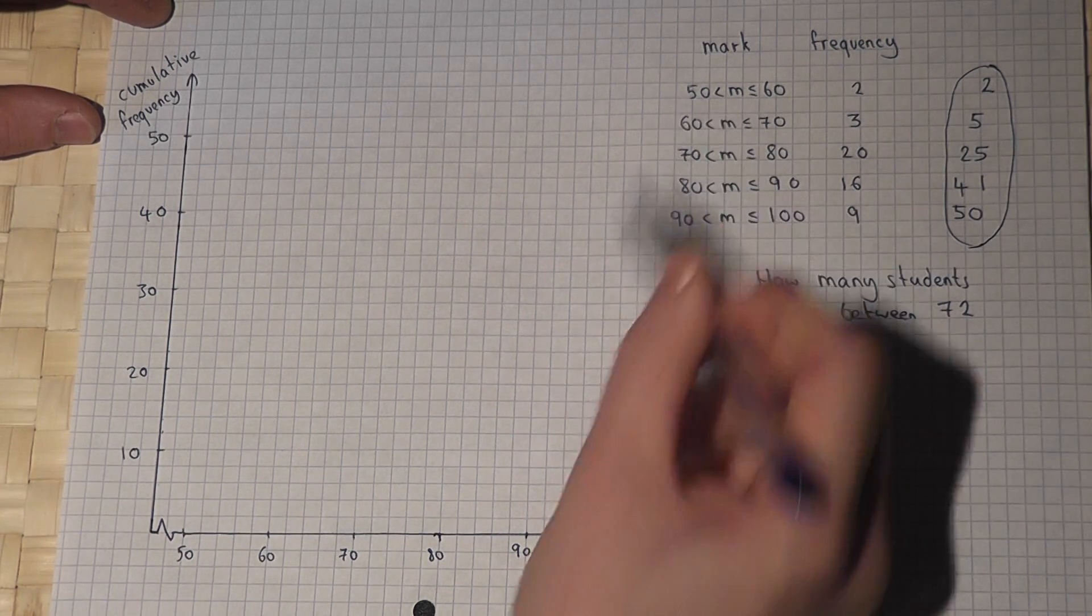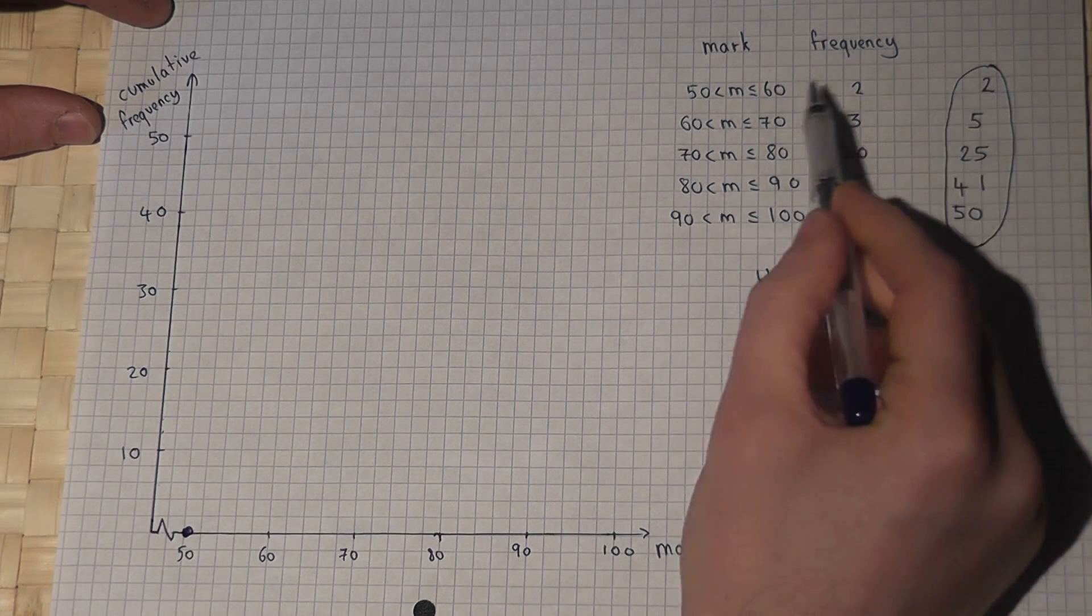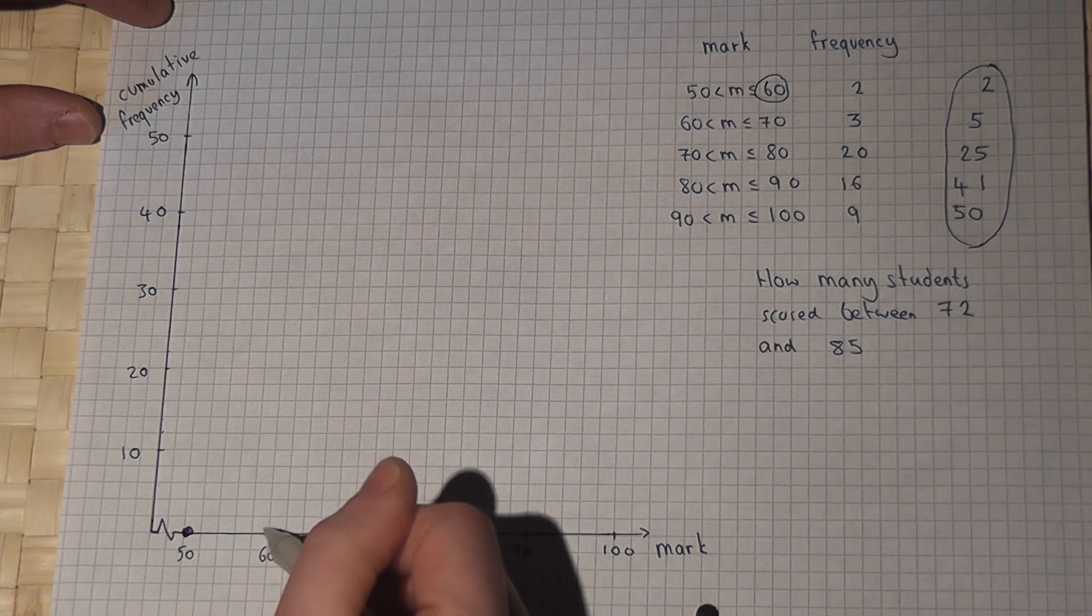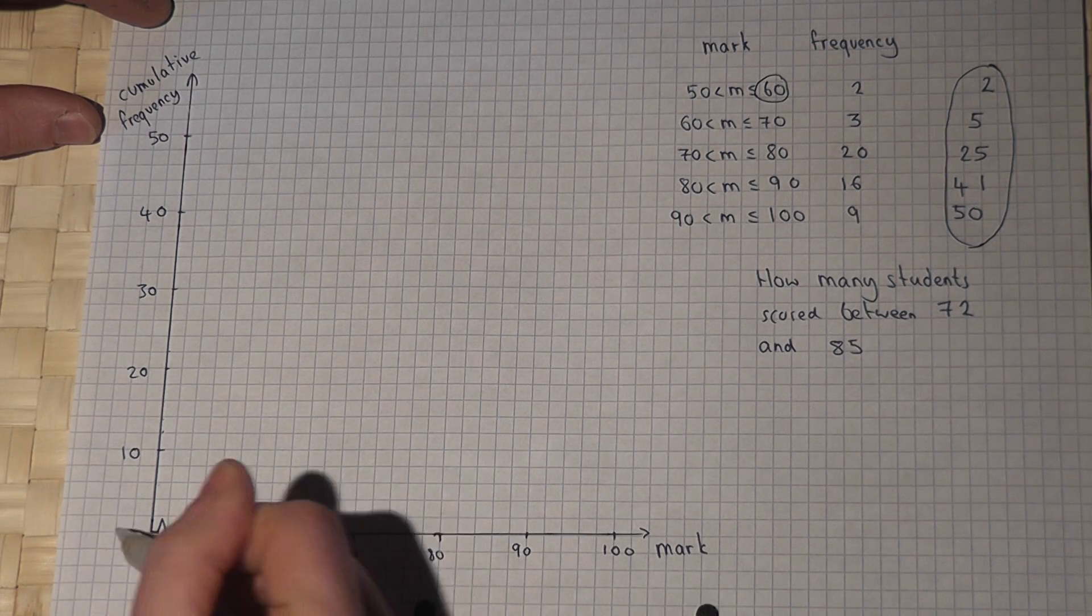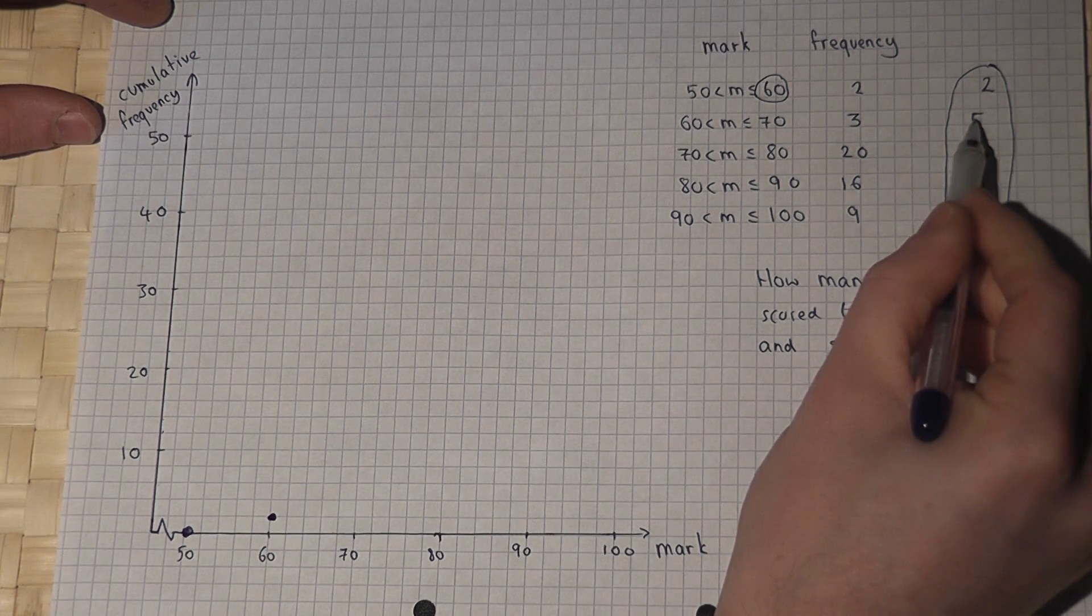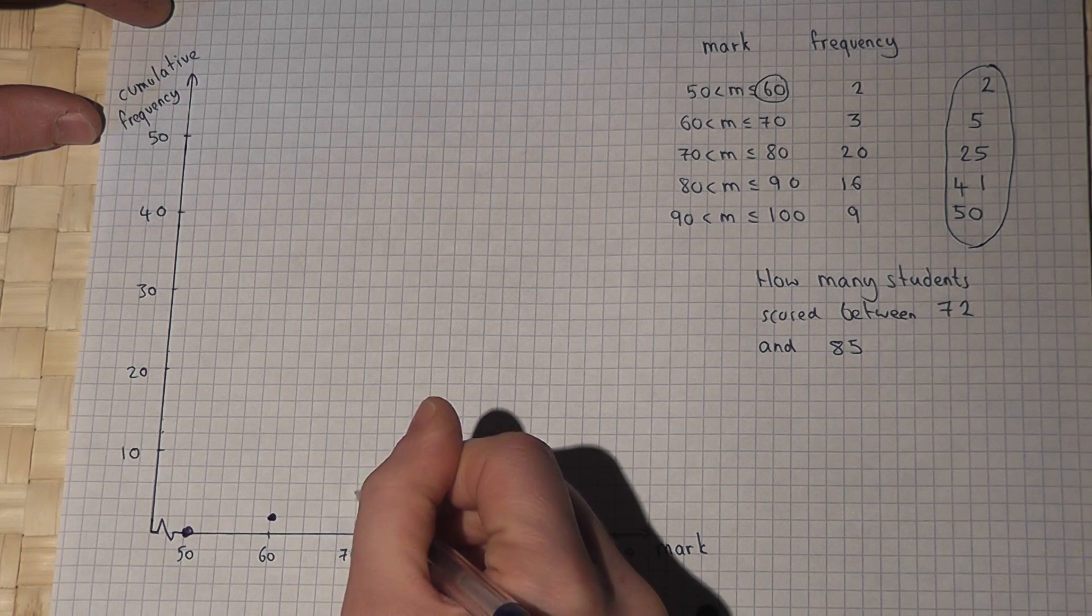So the data starts at 50 so I put a dot at 50 and there are two people who scored less than 60. So I go to 60 and find the frequency of 2 which is here. Then 5 people scored less than 70 so 70 is 5 people.